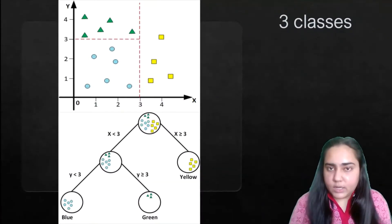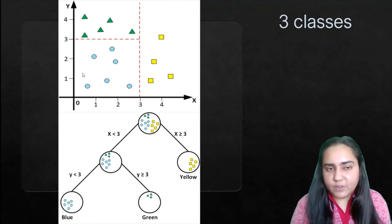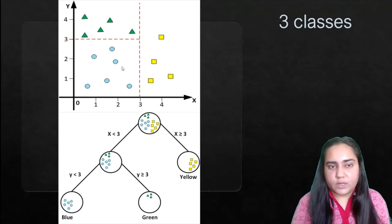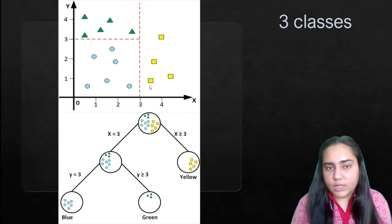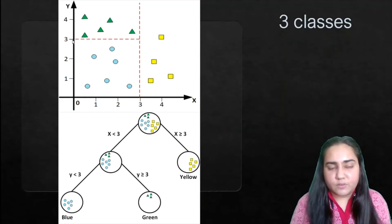What happens if you have three classes instead of two? You can see here there are three classes. There are some similarities with the two-class example — if a data point has an x coordinate greater than three then it is definitely the yellow class. If it is less than three it can be either blue or green, and that is decided on the basis of the y coordinate. If y is greater than three then it's green.